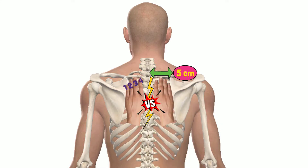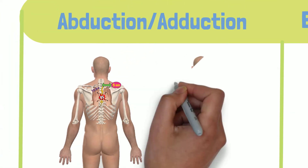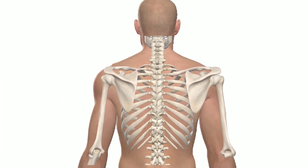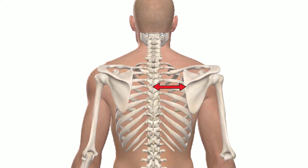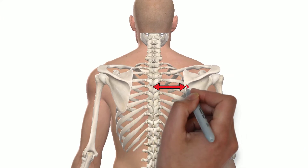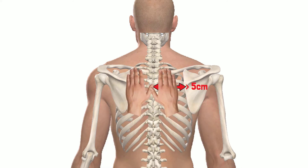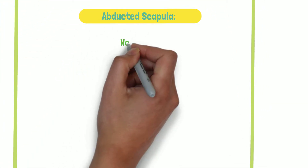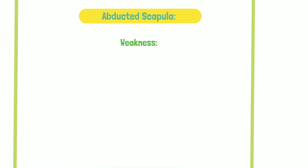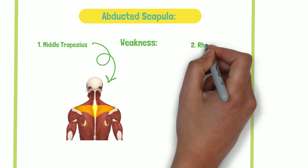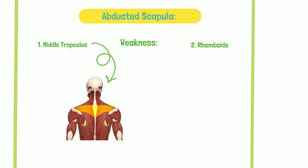Note the difference between the right and the left sides. An abnormal case is an excessively abducted scapula. Note the position of the right scapula — it sits further away from the spine. This dysfunction typically occurs secondary to weakness in scapula adductors, such as middle trapezius and, less often, rhomboids.